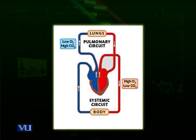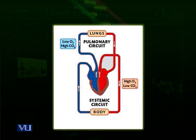Starting from the body, deoxygenated blood is returned from the body to the heart towards the right atrium. From the right atrium it goes to the right ventricle. From the right ventricle it goes towards the lungs to be oxygenated. The lungs oxygenate that blood, and then oxygenated blood from the lungs is returned to the heart towards the left atrium. Through the left atrium, blood goes to the left ventricle, which when it contracts pushes the blood back towards the body.